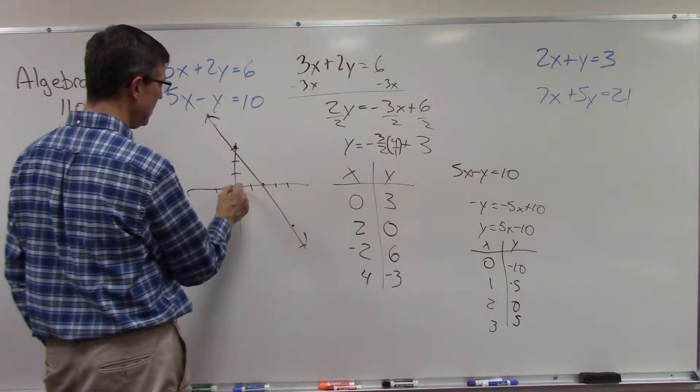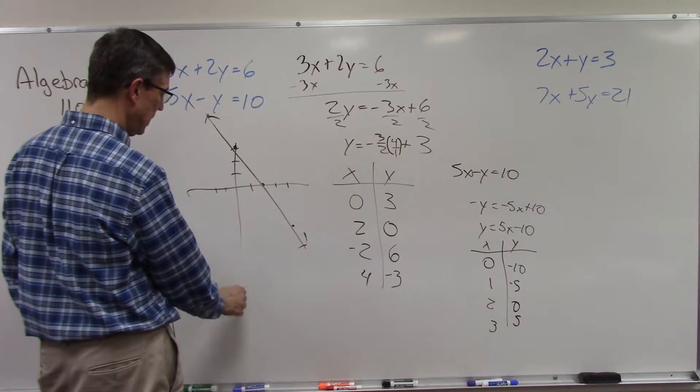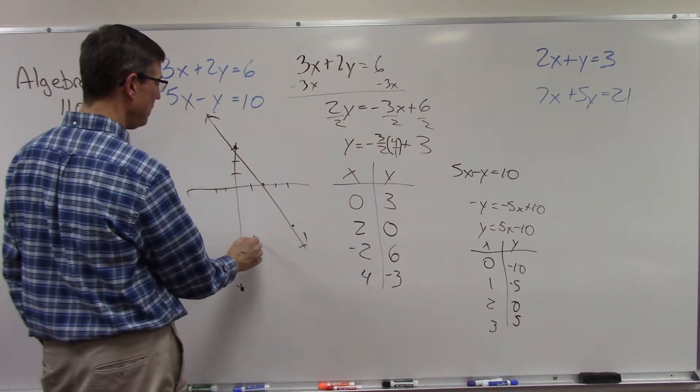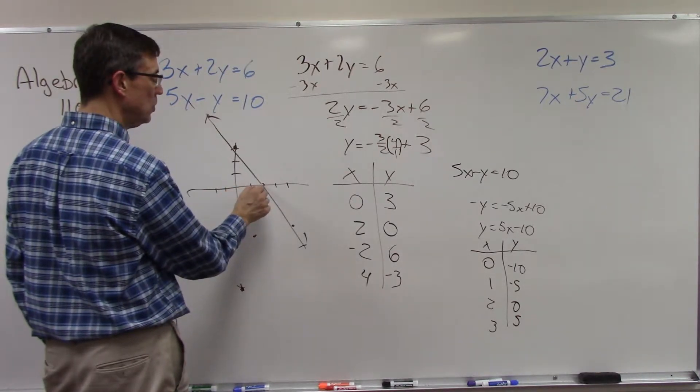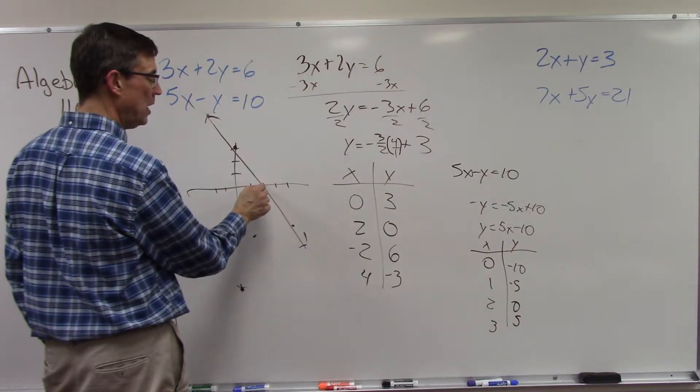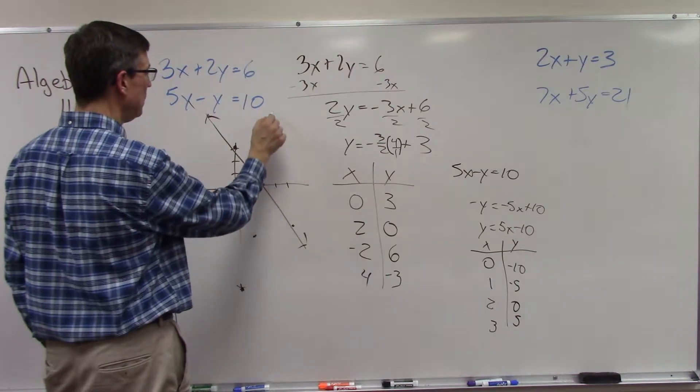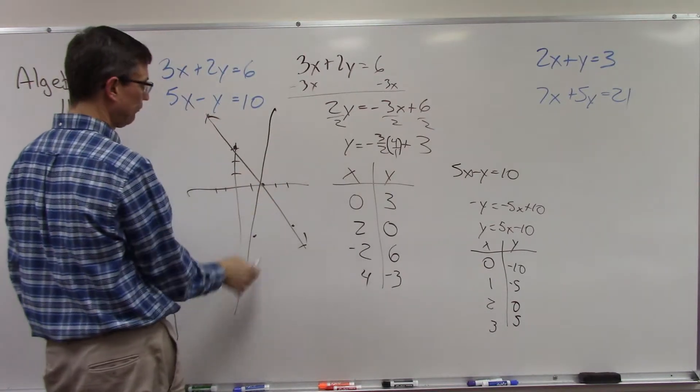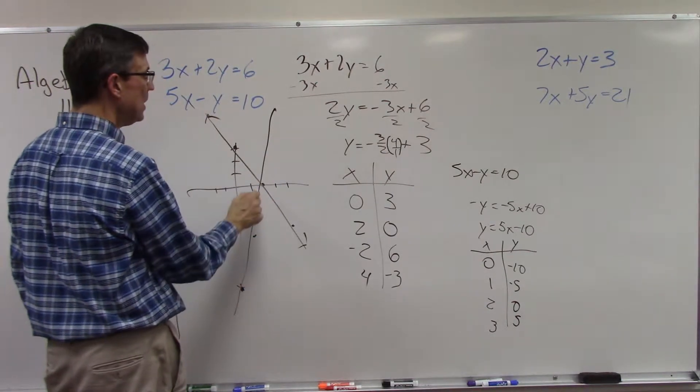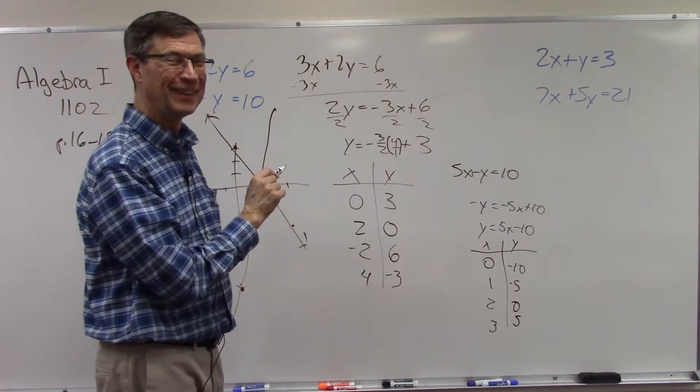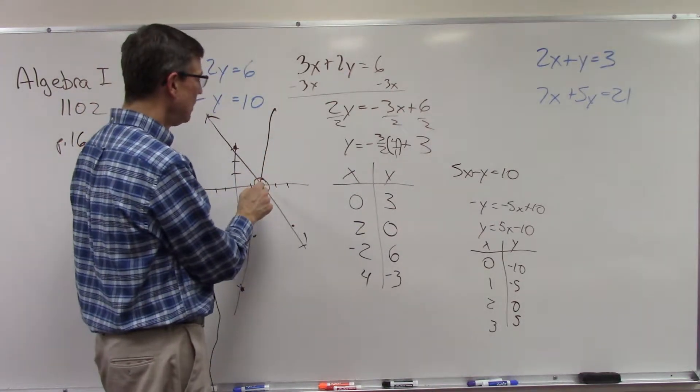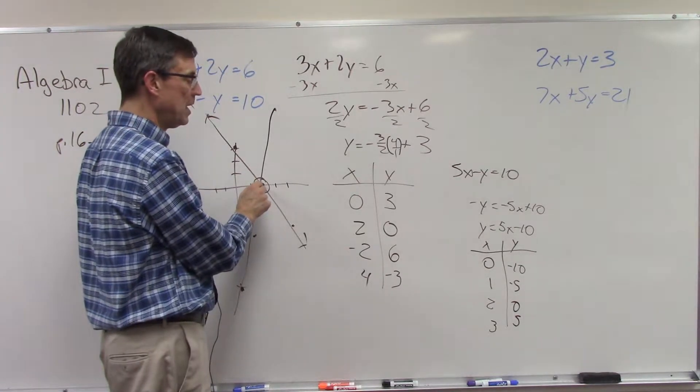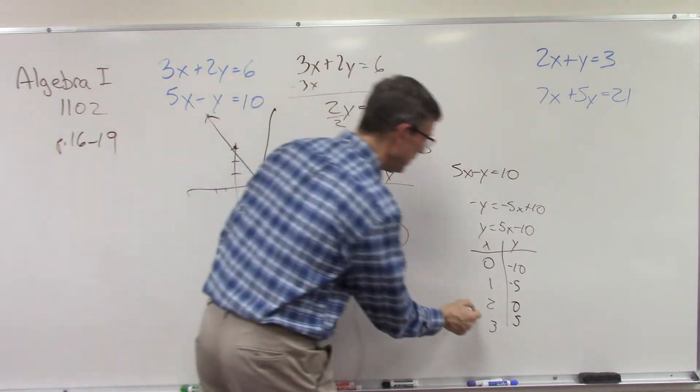And then 3 would be 15 minus 10 is 5. See how easy that is? Now I'll come over to the same graph. At 0 we're way down here at negative 10. At 1 we're at negative 5. At 2 we're at 0. Then over here at 3 we're up here at positive 5.